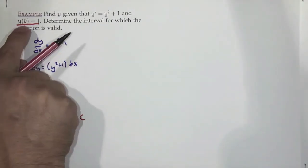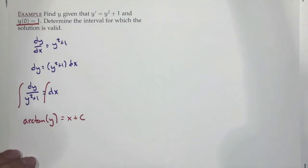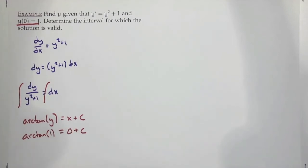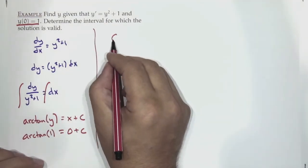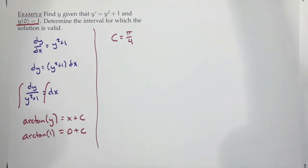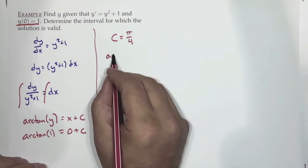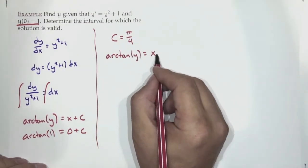Plugging in x=0, y=1: arctan(1) = 0 + C. Arctan(1) is π/4, because tangent of π/4 equals 1. So C = π/4. Therefore arctan(y) = x + π/4.